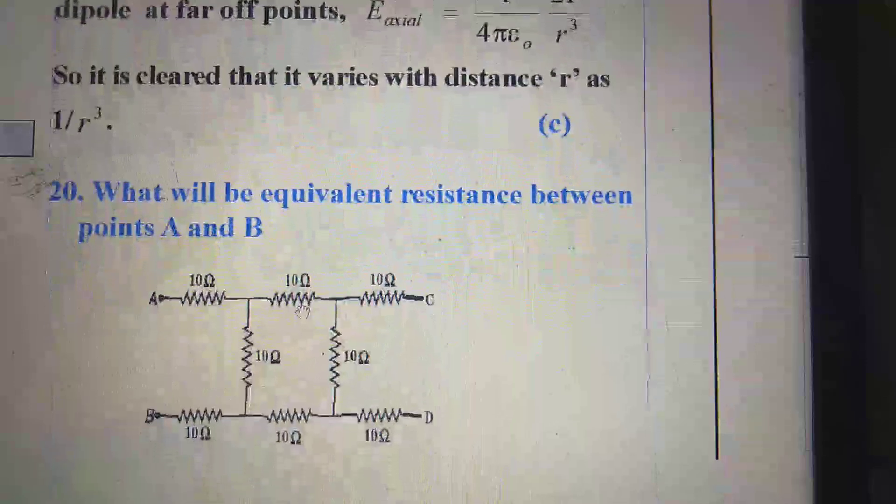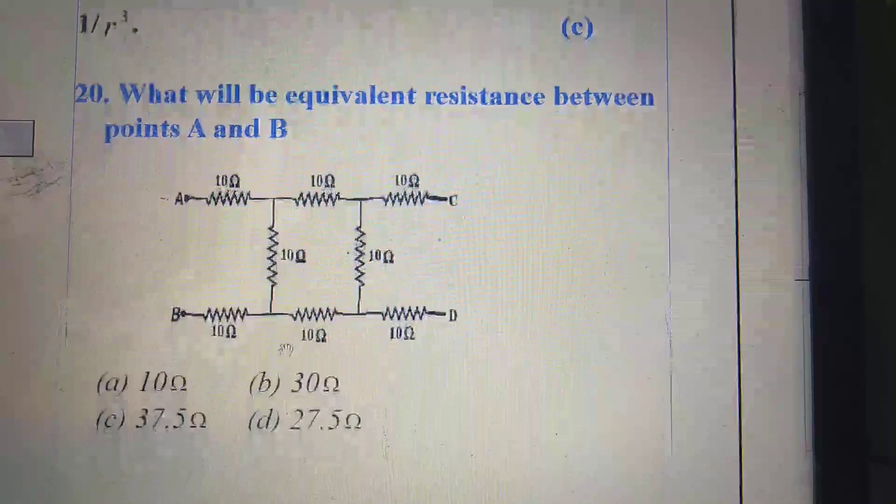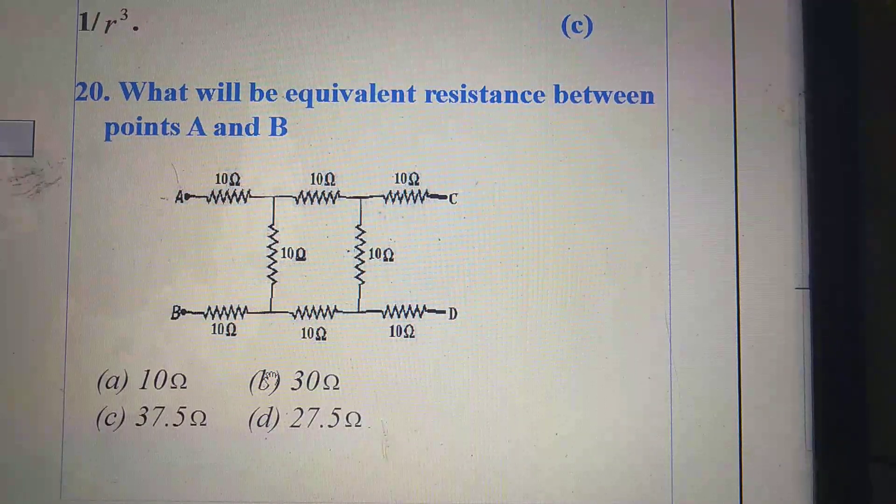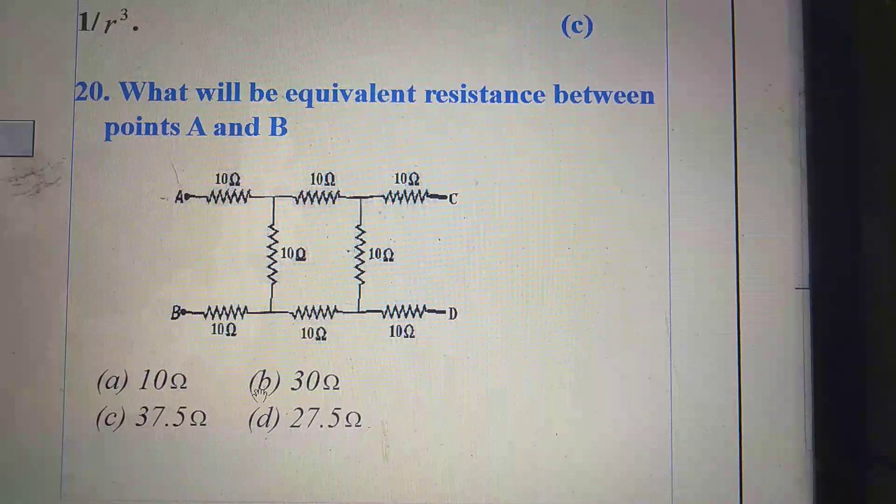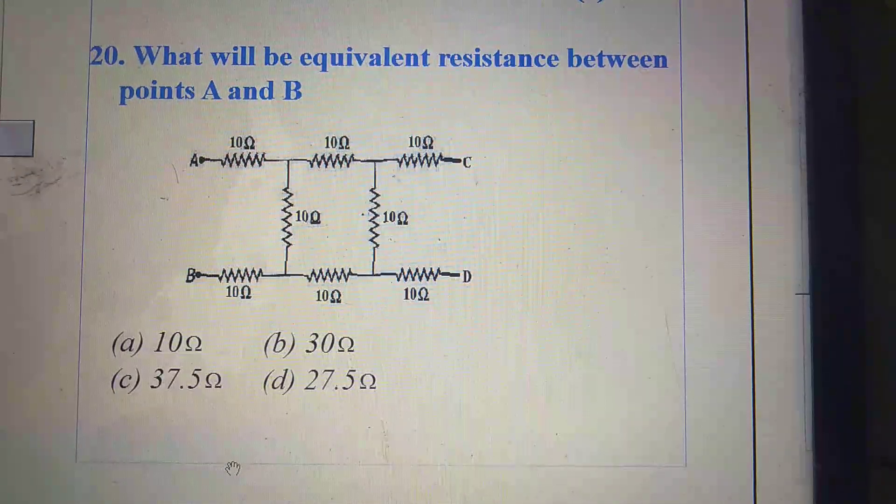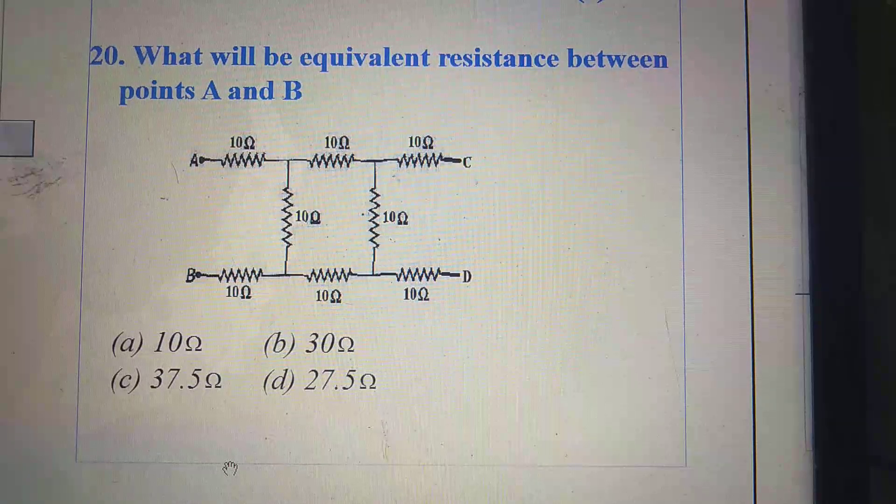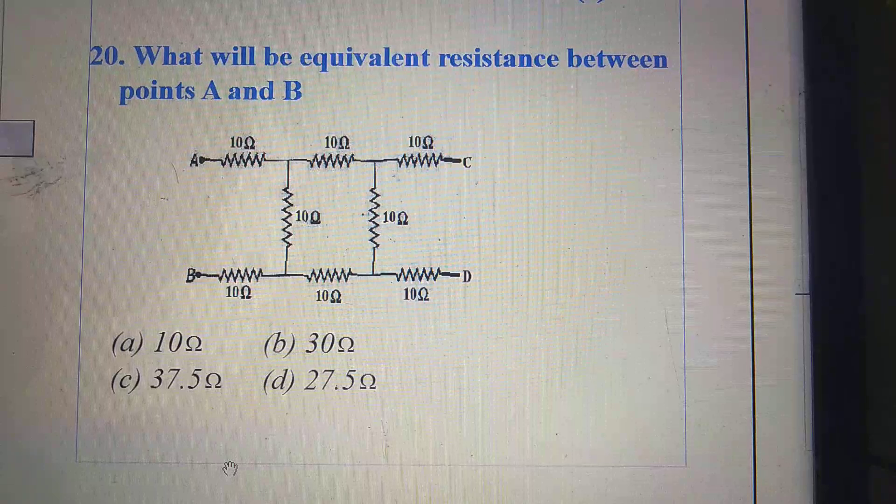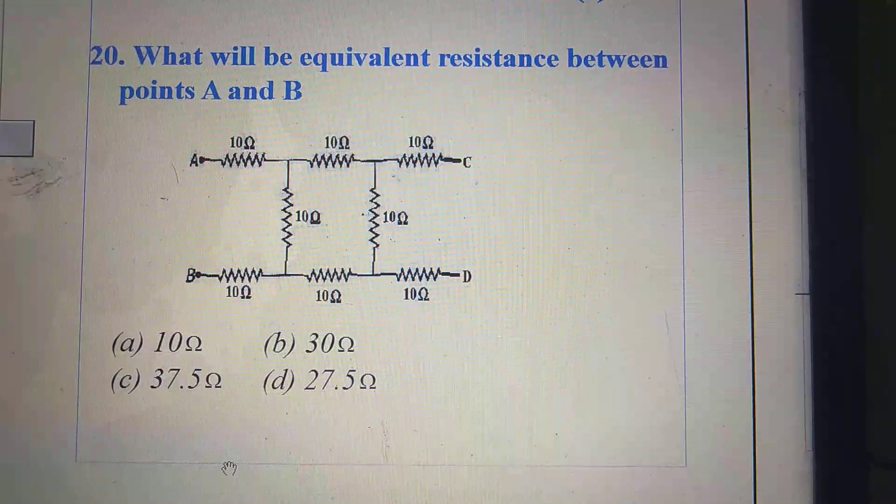Last question: what will be equivalent resistance between points A and B? Here, circuit diagram is given. Option A, 10 ohm. Option B, 30 ohm. Option C, 37.5 ohm. Option D, 27.5 ohm.